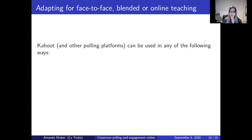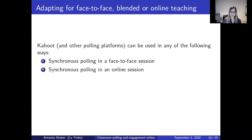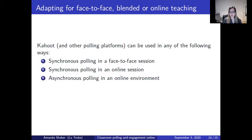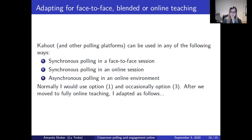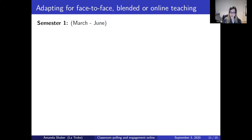This is probably what we all want to know about. Kahoot — and probably other polling platforms as well — can be used in these ways: firstly, synchronous polling in a face-to-face session; secondly, synchronous polling in an online session — I could share my screen right now and we could do a Kahoot; all you need is the PIN and a device; or thirdly, asynchronous polling in an online environment. Normally in a face-to-face context I would use synchronous in-person polling. When we moved to fully online teaching back in March, in semester one — which runs from March to June — my lectures were asynchronous, so I used Kahoot asynchronously.